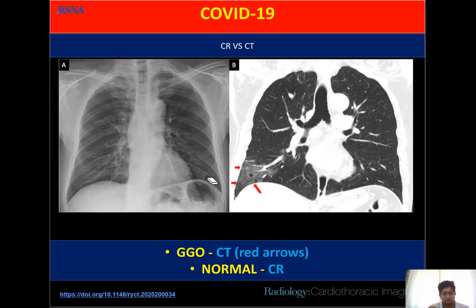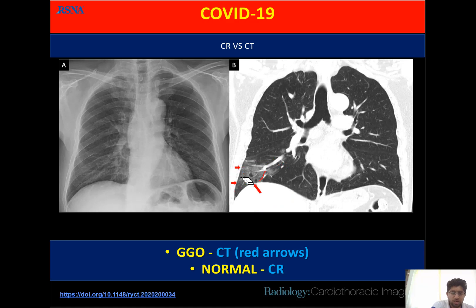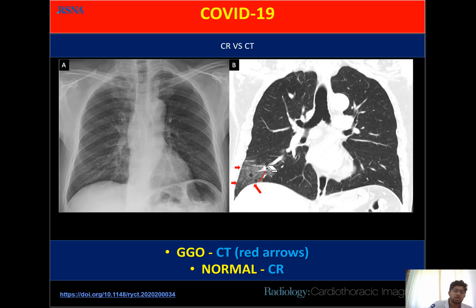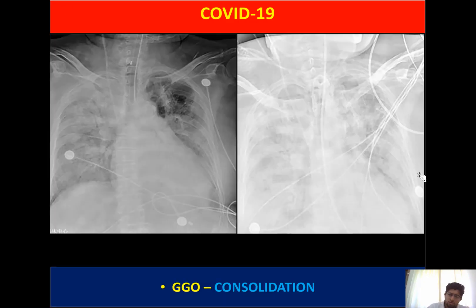Comparing chest radiograph with CT: on CT we can see peripheral ground glass opacity — whitening of the lung with vessels still visible passing through, confirming ground glass opacity with peripheral distribution. In the corresponding area on the chest X-ray, no changes are visible and it appears normal, whereas ground glass opacity is clearly seen on CT — demonstrating that CT has greater sensitivity compared to chest X-ray.